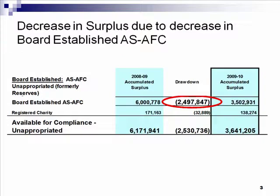The first thing is that we can go to a higher-level view. What I did is I just cut out the pieces that were the high-level view to say, okay, there's been a decrease in the surplus, and here's why. This is the major component. So I've put a headline on this slide: decrease in surplus due to decrease in board-established AS-AFC. The concept here is we start at the higher level, and we show them the higher level — over 90% of the overall decrease drawdown is due to this one area.